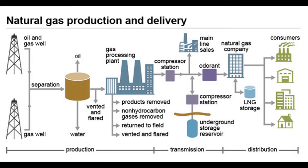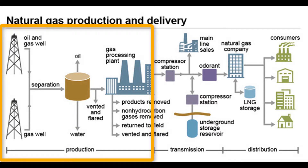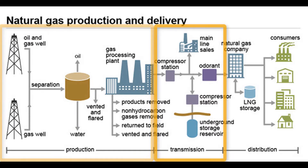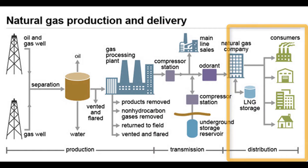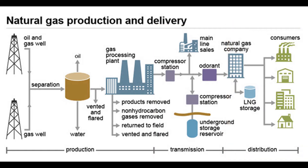Before we talk about underground storage, let's have a quick look at a process flow diagram. We can see furthest to the left we have the production stage, then in the middle we have transmission, and furthest to the right we have distribution, which represents the final stage of gas delivery.